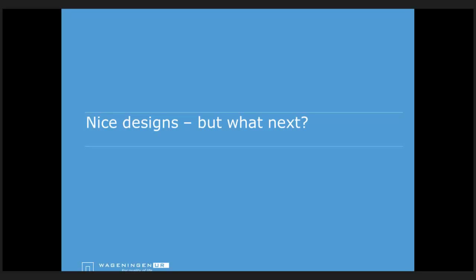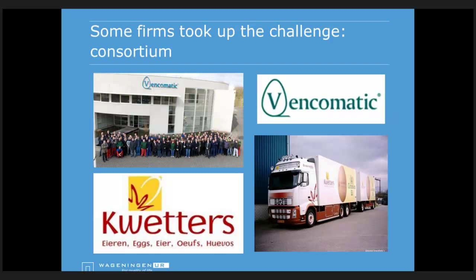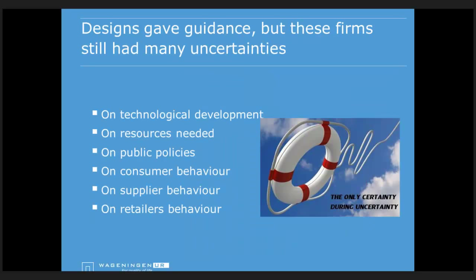The research project ran from 2004 to 2006, producing designs and briefs of requirements. After the research ended, the sector was expected to take it up. Some firms formed a consortium: Vancomatic, a husbandry system producer, and Quetters, a logistics firm specializing in egg marketing and packing. The designs gave the consortium guidance on direction, and they were determined to maintain the round form of the Rondale.